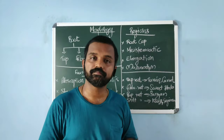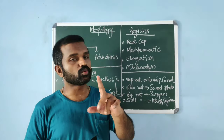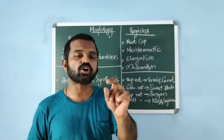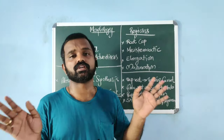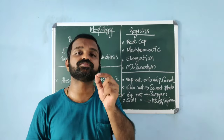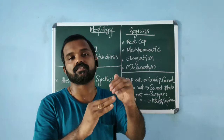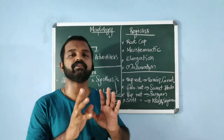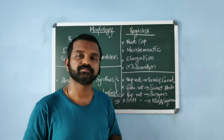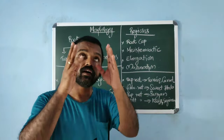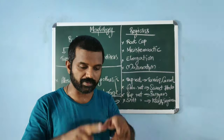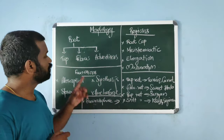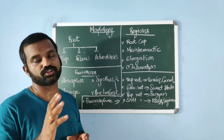In the fibrous root system, seen in monocots, a primary root is formed from the radicle but it is short-lived. It is soon replaced by a cluster of thin roots arising from the base of the stem. Adventitious roots differ in that they arise from parts other than the radicle — maybe from branches or from the main stem.